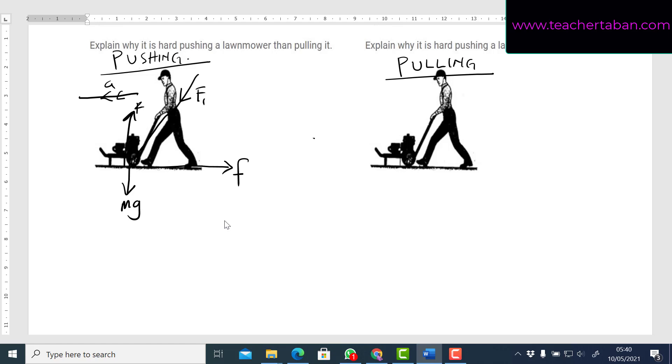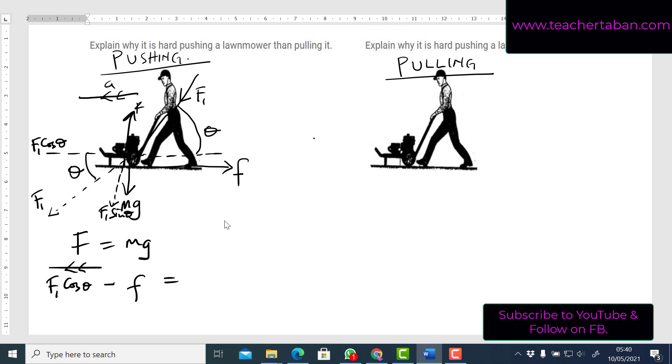So from the second law of motion, the resultant force is given by ma. In this case, please note that we have the force acting at an angle theta to the horizontal. Since the person is moving to the left, we shall resolve this force to be moving in the direction of motion. So if this angle is theta, I'll be having F1 cos theta horizontally and then downwards its component will be F1 sin theta. So my resultant force horizontally will be equal to F1 cos theta minus the frictional force equals ma.